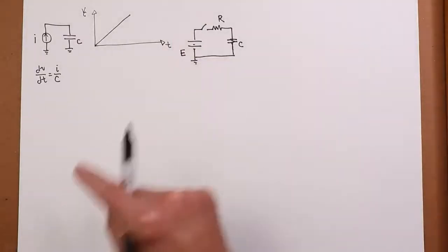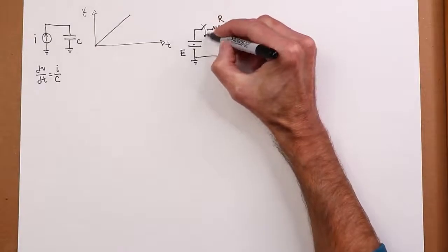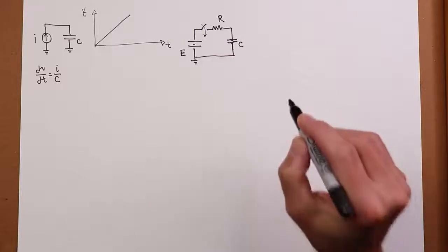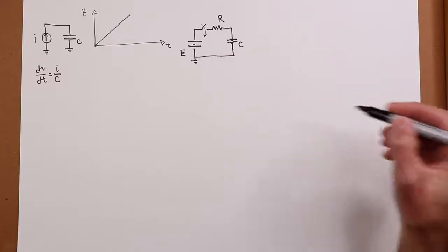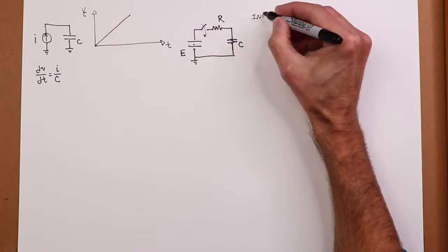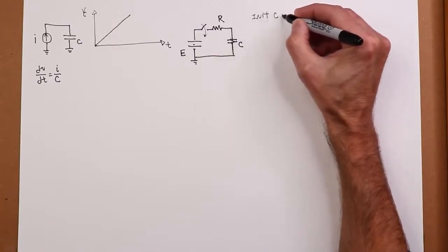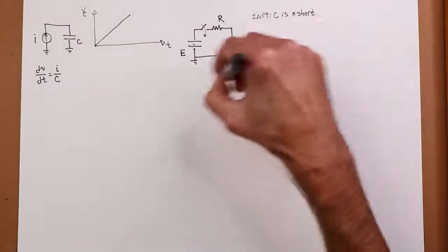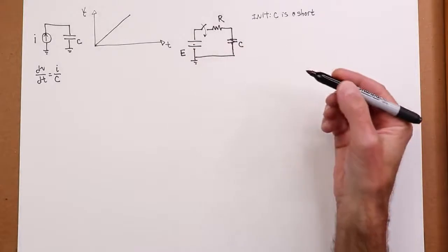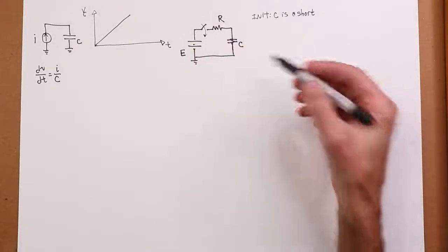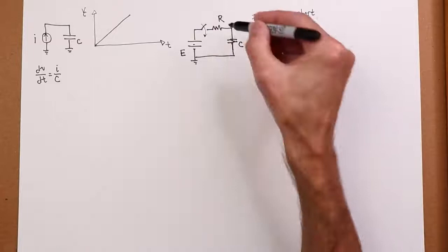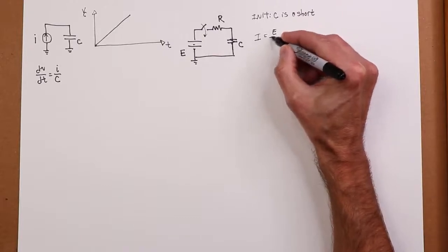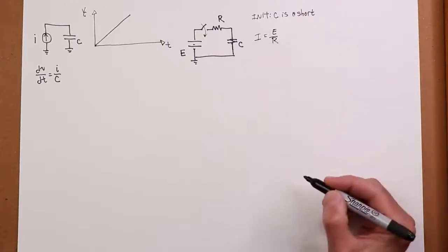So we throw the switch, make contact. What ends up happening? The voltage across the capacitor cannot change instantaneously. It's still a short. When I look around this loop, KVL still has to pan out. If that's a short, all of E must drop across R. The circulating current at that instant is E over R. Basic Ohm's Law.